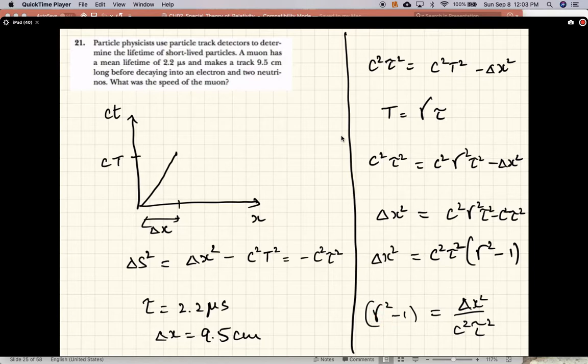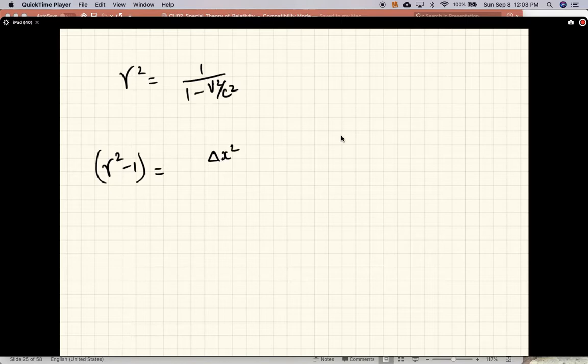Gamma squared is, of course, 1 over 1 minus v squared by c squared. So what we'll calculate is gamma squared minus 1 equals delta x squared over c squared tau squared. And we know all these quantities, so let's substitute this.